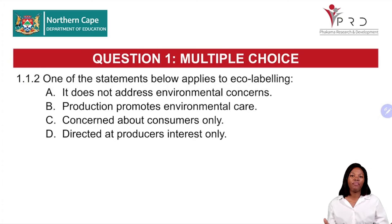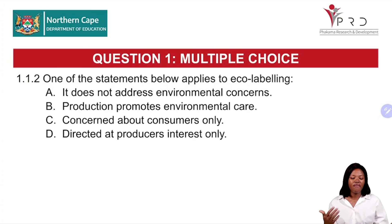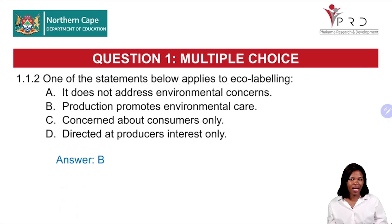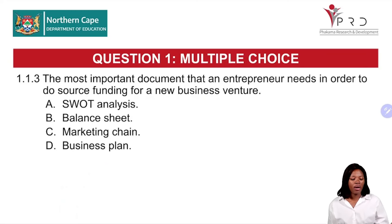Question 1.1.2: One of the statements below applies to eco-labeling. Eco-labeling is part of green marketing, where we produce green products and use packages that are environmentally friendly. The correct answer is B — production promotes environmental care. We are packaging using packages that are biodegradable and recyclable.